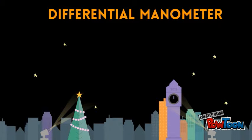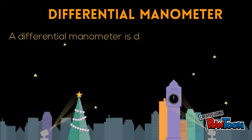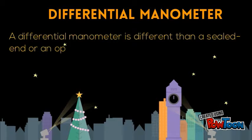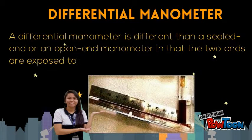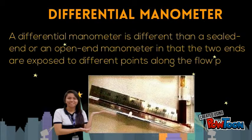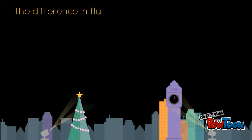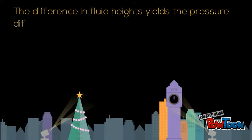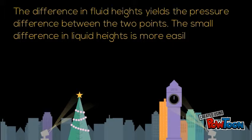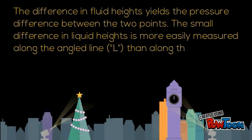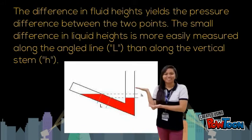A differential manometer differs from a sealed end or open end manometer in that both ends are exposed to different points along the flow path. The difference in fluid heights yields the pressure difference between the two points. The small difference in liquid heights is more easily measured along the angled line than along the vertical stem.